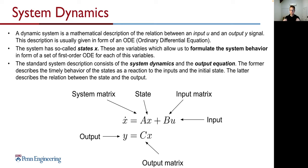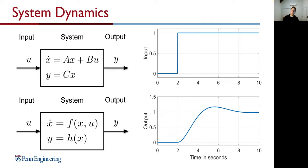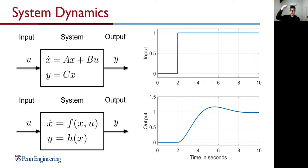Think about our car: as an input we could have the steering angle, then we have states describing the vehicle behavior, and finally we see a vehicle behavior output. For example, a step function input leads to a certain output based on the system dynamics — a step function leads to linear and non-linear behavior of the output. That's a refresher on system dynamics.